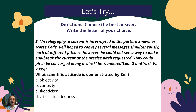Number five: in telegraphy, a current is interrupted in the pattern known as Morse code. Bell hoped to convey several messages simultaneously, each at different pitches. However, he could not see a way to make and break the current at the precise pitch required. How could pitch be conveyed along a wire? He wondered. What scientific attitude is demonstrated by Bell? A — objectivity; B — curiosity; C — skepticism; D — critical mindedness.